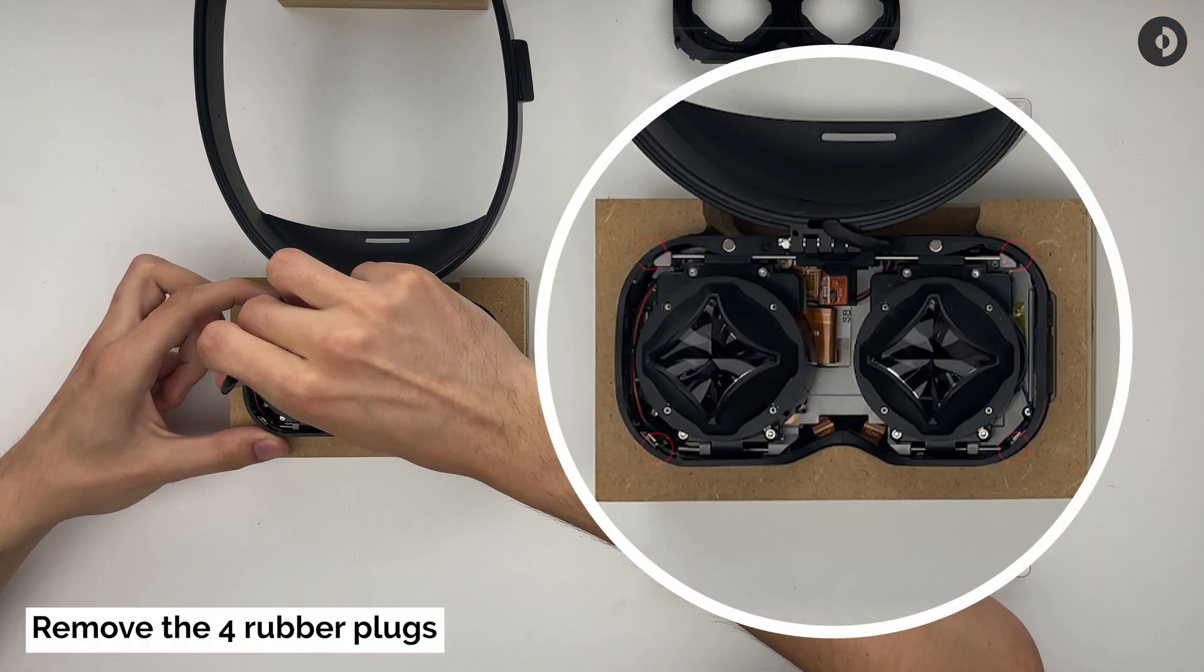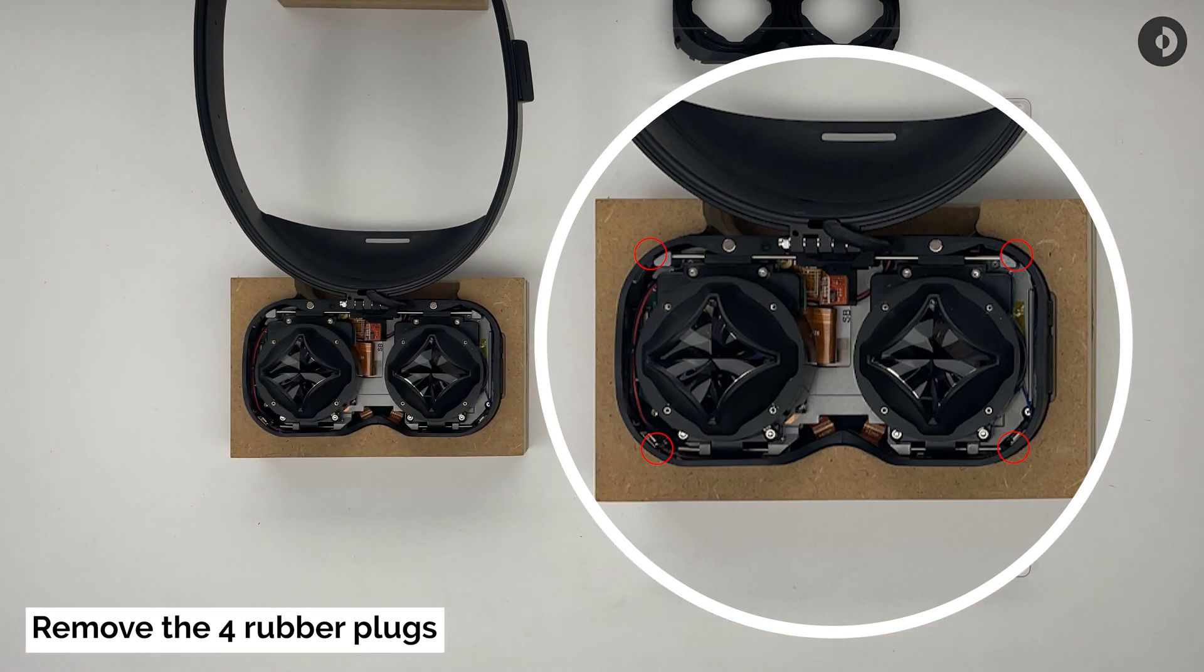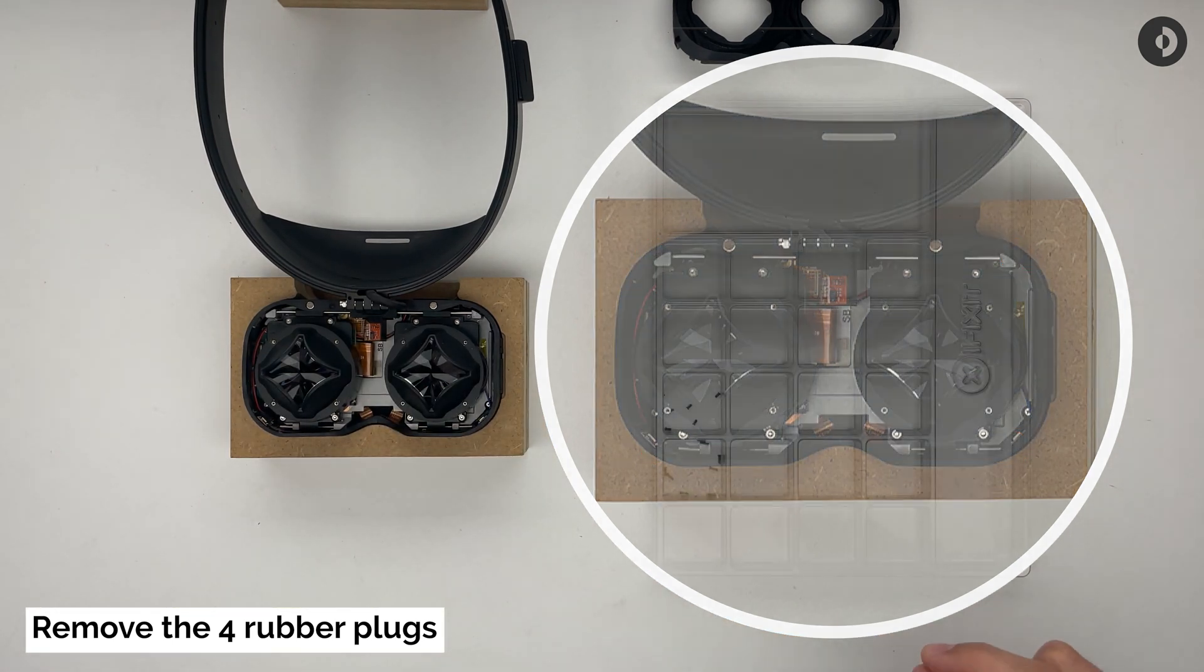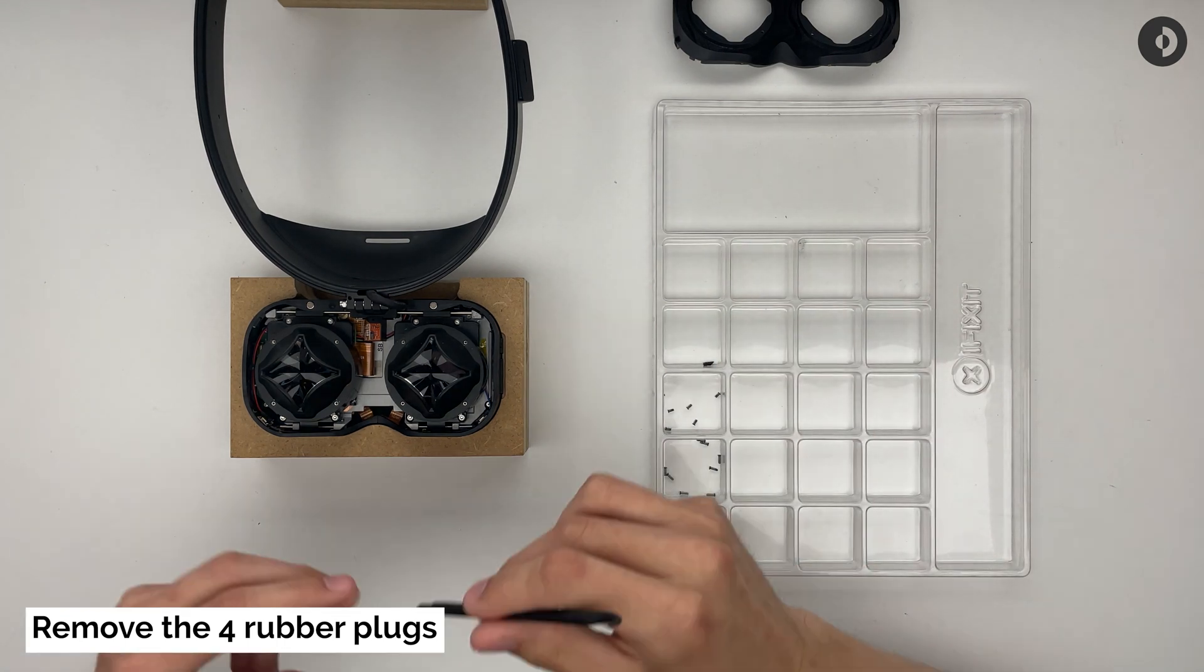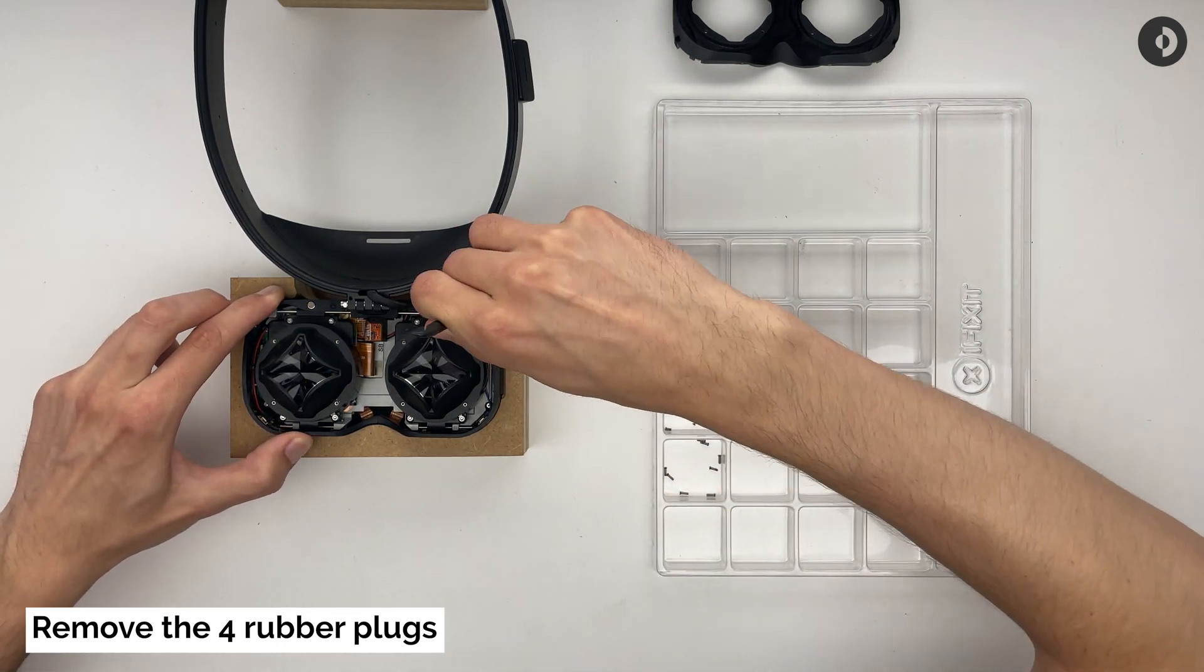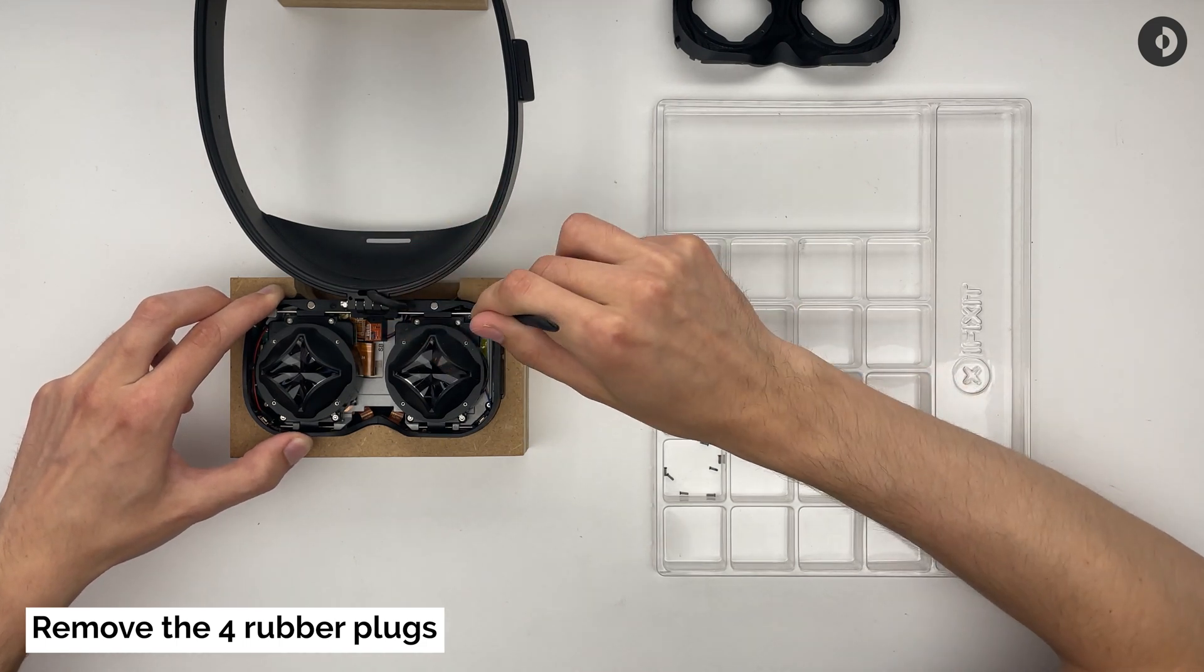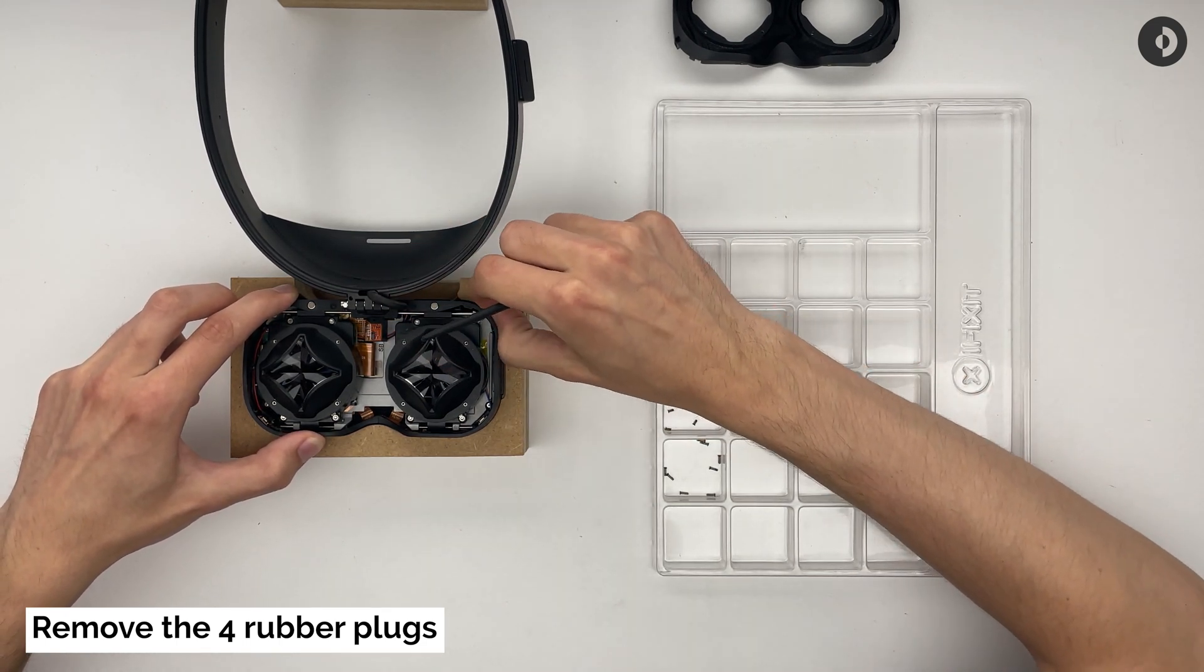With a pick or a small pair of tweezers, push the rubber covers out of the shell. There are small black rubber plugs aligned with the metal rods holding the optical blocks. You will find 4, 2 at the top and 2 at the bottom. The top and bottom rubber covers don't have the same shape, so please make sure you store them in pairs.